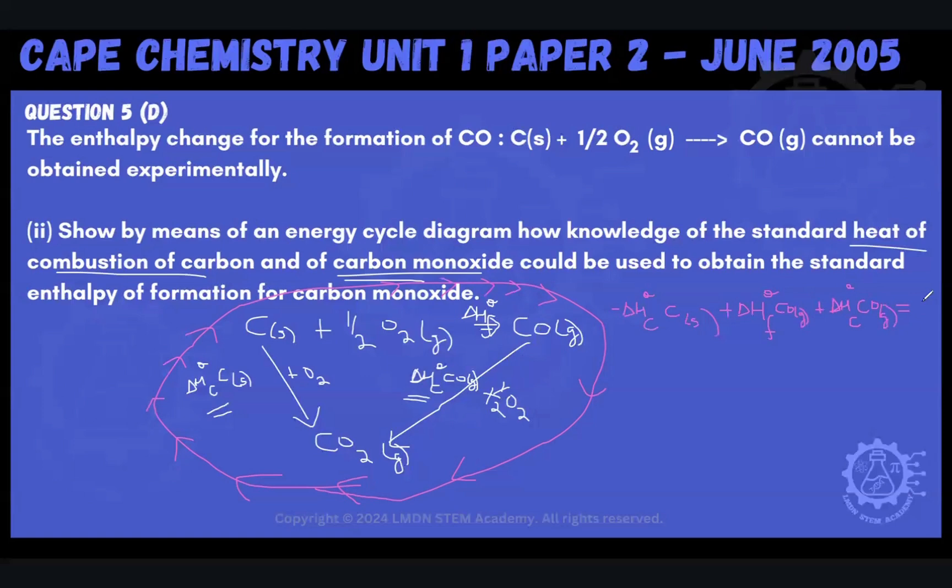So it's going to be plus delta Hc theta carbon monoxide gas. And all of that is equal to zero because I just made a loop. So everything adds up to zero. What do I need to make my subject? This is what we're trying to find. This is what we couldn't find experimentally. So this is what we're trying to find by using the cycle.